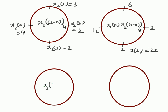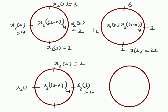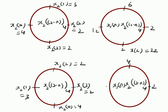Finally, we shift one more time to get x2(3-n mod 4). This is the last shift, because one more shift would return to x2(-n mod 4). The values are x2(3) = 2, x2(2) = 2, x2(1) = 3, and x2(0) = 4. The products are 2×1 = 2, 2×2 = 4, 3×3 = 9, and 4×1 = 4, giving x(3) = nineteen.